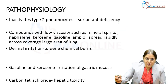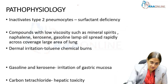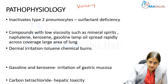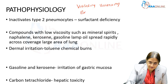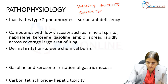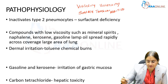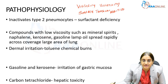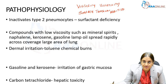The pathophysiology of hydrocarbon poisoning depends upon the viscosity, the volatility, the surface tension, and any additives added. The viscosity and volatility determine how much pulmonary penetration occurs. Where there is decreased viscosity and increased volatility, there will be an increased amount of pulmonary spread.